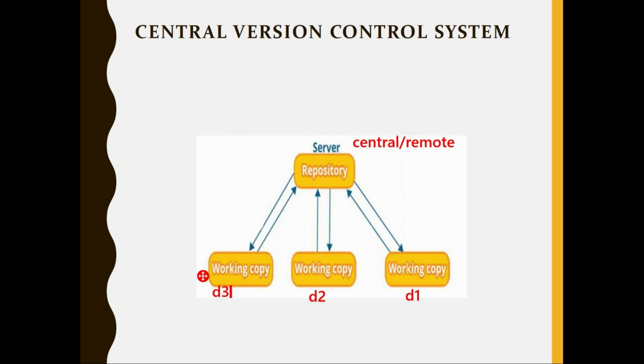That's the simple architecture of centralized version control systems. There are some drawbacks: the first limitation is you need to always have network connectivity because you need to connect to the central server where all the code bases are. Also, if the central server is lost, chances of recovering that data are very less because it works like a single source of truth — if the data is gone, there is no backup.